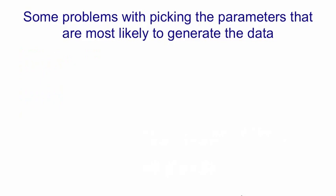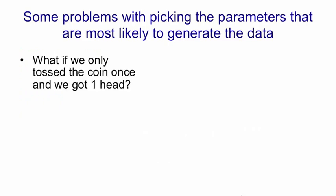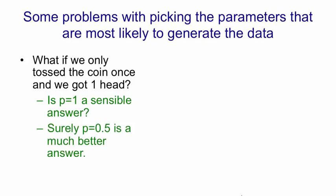But there's some problems with using maximum likelihood to decide on the parameters of a model. Suppose, for example, we only tossed the coin once and we got one head. It doesn't really make sense to say we think the probability of the coin coming down heads in future is 1. That would mean we'd be willing to bet at infinite odds that it can't come down tails, and that seems ridiculous.